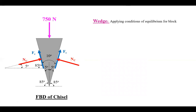Extending the line and drawing a horizontal, the two equal angles give 85 degrees, and because this is a right-angle triangle the remaining angle is 5 degrees. Similarly on the other side, the angle for Nc is 5 degrees and the angle for Fc is 85 degrees. This completes the geometric setup needed to apply the equations of equilibrium.